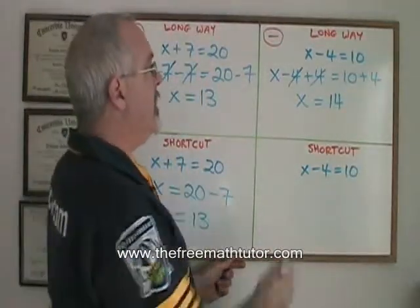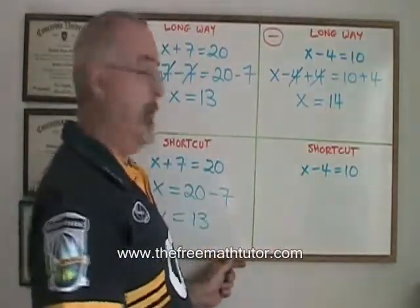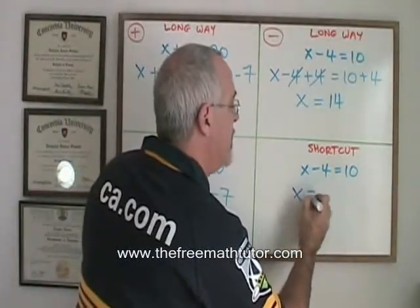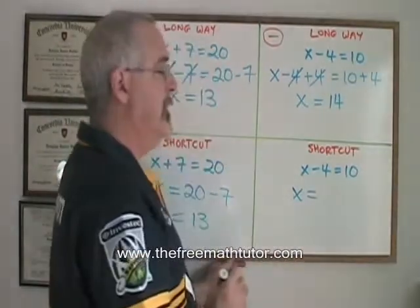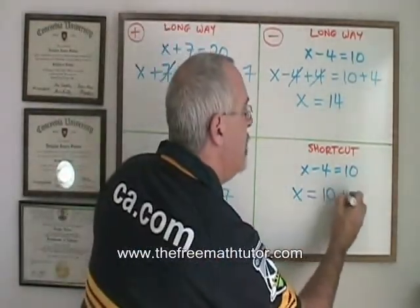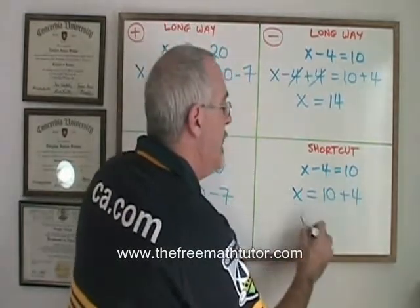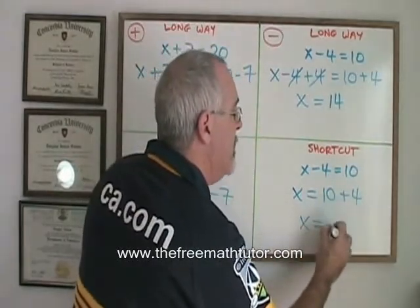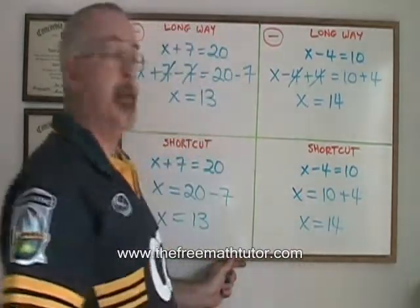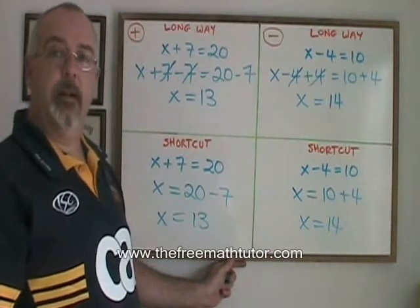With the shortcut, I don't bother showing the plus 4 on the left side. I just write my x isolated and I show that I am adding 4 to the right side. x is equal to 10 plus 4, which is 14. It is the same answer, and it is the correct answer.